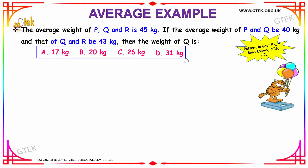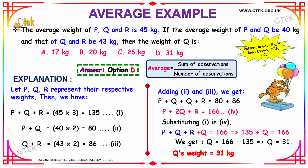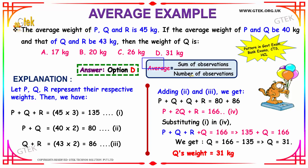These patterns of questions appear in government, bank, CTS, and HCL exams. The logic behind solving this question: we have the weight of P, Q, and R represented by P, Q, and R, and the average is given to be 45. As per our formula, average is equal to sum of observations divided by number of observations.